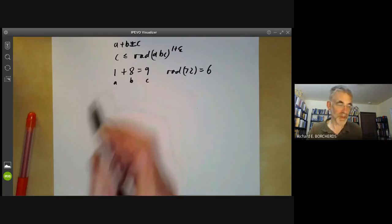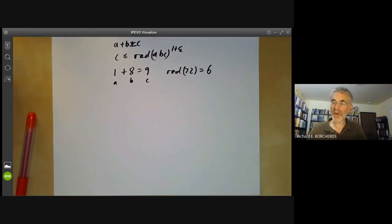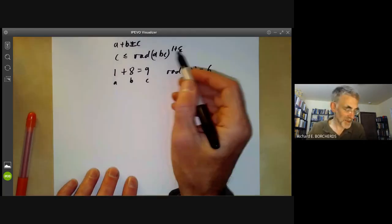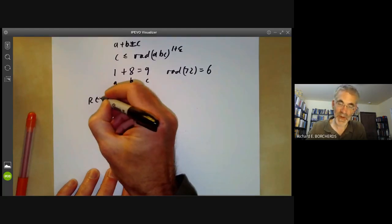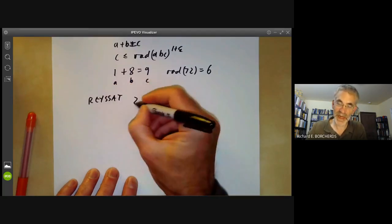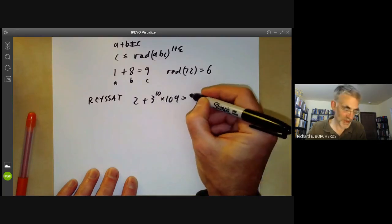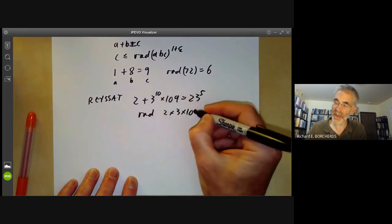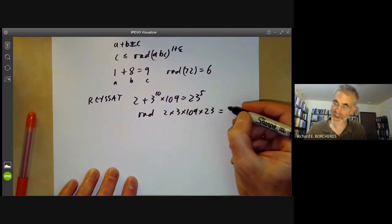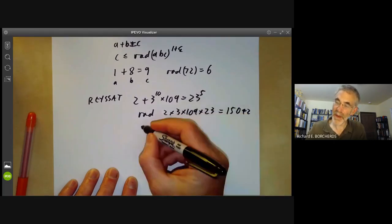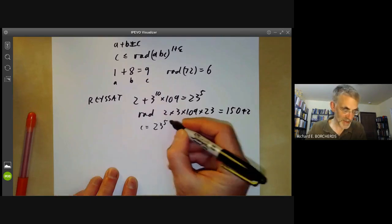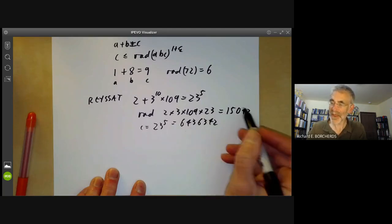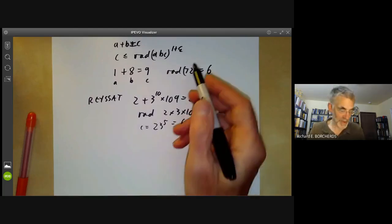You can actually find quite a lot of examples like this. So the question is how big can epsilon be and people try to find examples where epsilon is as large as possible. One of the biggest for example was found by Reysat and says that 2 plus 3 to the 10 times 109 equals 23 to the 5 and the radical of ABC is 2 times 3 times 109 times 23 which is 15042 and this number C is 23 to the 5 which is 6436343 so it's quite a bit bigger than this radical but it's less than the square of the radical so epsilon is less than 1 even in this example.